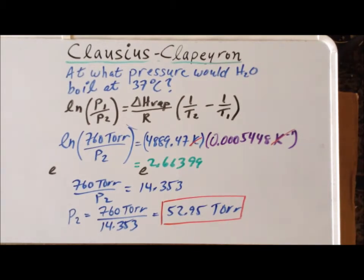because the vapor pressure of water at 37 degrees centigrade is 52.95 torr. And we have boiling—boiling occurs by definition when the vapor pressure of the liquid is equal to the external pressure.